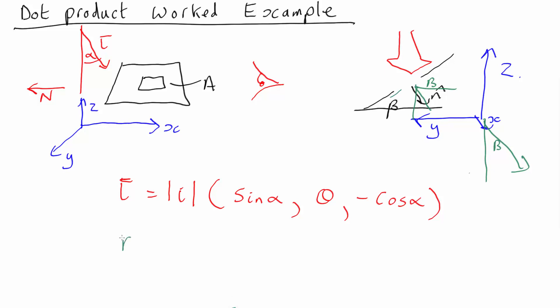So the normal vector is going to have unit length, and its magnitude is going to be no x component. The y component is going to be minus, it's opposite, so minus sine beta. And the z component is going to be minus cos beta.